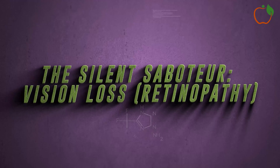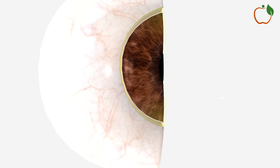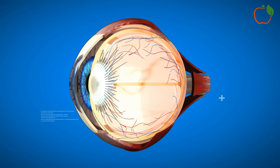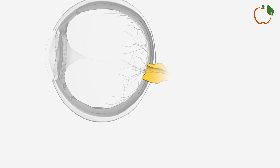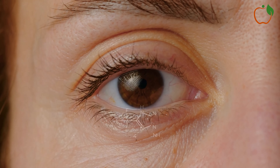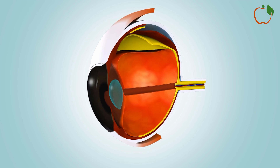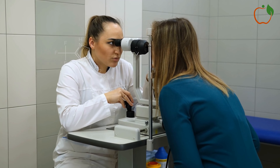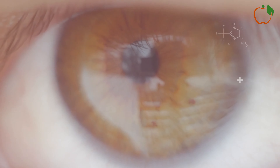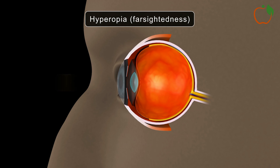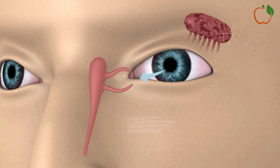Diabetes can have a devastating impact on the eyes, leading to a range of vision problems that can ultimately result in blindness. Diabetic retinopathy affects the blood vessels in the retina, the light-sensitive tissue at the back of the eye responsible for converting light into electrical signals. In non-proliferative retinopathy, high blood sugar levels cause retinal blood vessels to leak fluid and proteins, leading to swelling and impaired vision. As the condition progresses into proliferative retinopathy, new and abnormal blood vessels grow on the surface of the retina — a process called neovascularization. These fragile vessels are prone to leaking, leading to scarring and potential retinal detachment, which can cause severe vision loss or blindness.